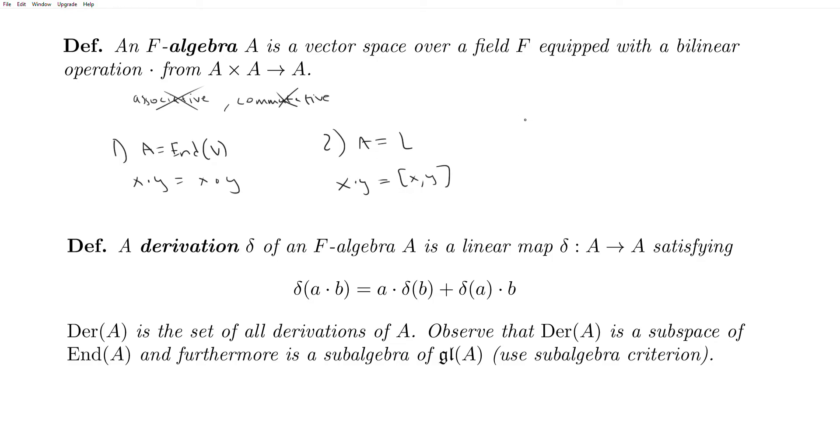And so interestingly enough, if you consider A is equal to gl(V), then A is both endowed with this composition of linear maps, and it has a bracket. So it's kind of an F-algebra in two different senses. So don't confuse the two.